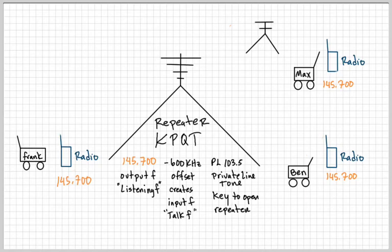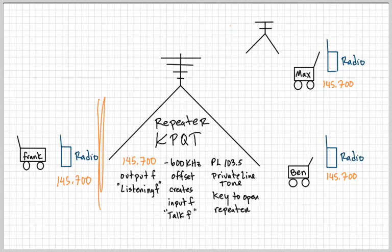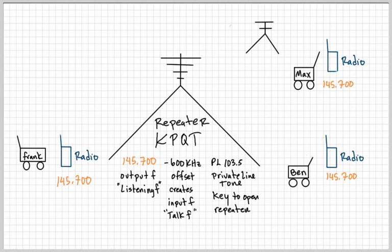If you have one of these handy talkies — those radios that fit in your hand — make sure the antenna is pointing straight up and down. If you put the antenna at a slight angle when you transmit or speak, it might not give a strong signal. A lot of people say the antenna needs to be pretty vertical when you speak. You'll also figure out how close you need to be to the radio microphone.